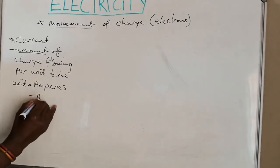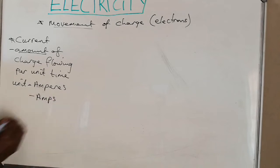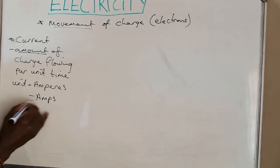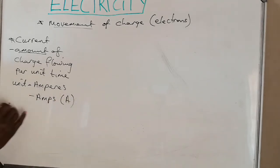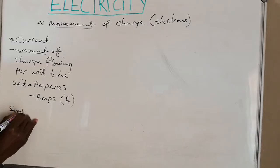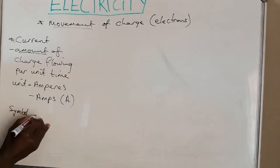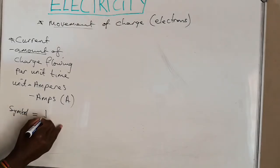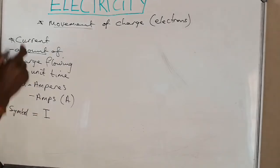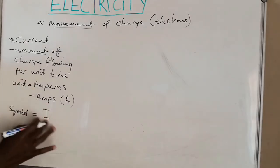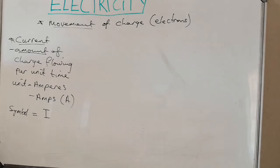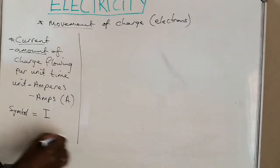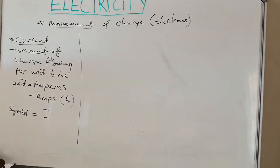In short, you can call it amps, and you'll be using the letter A. In your calculations and formula you'll be using the symbol I for current. So whenever we see the symbol I, it represents current.